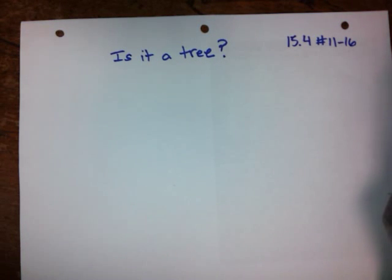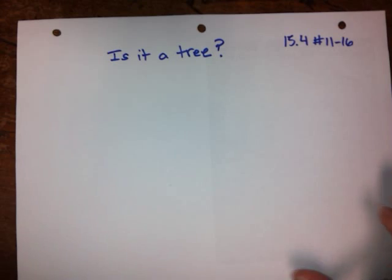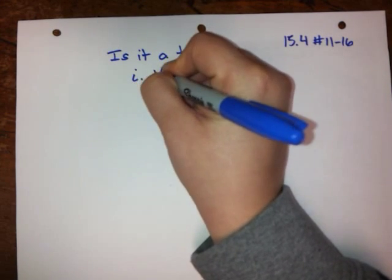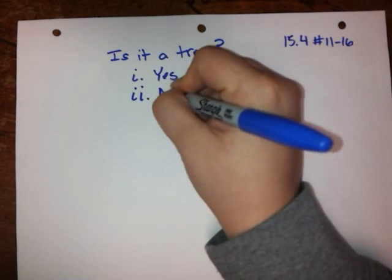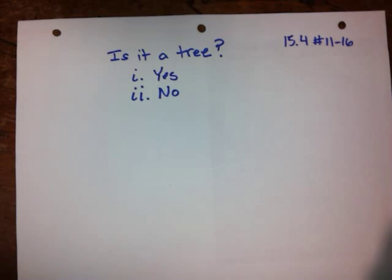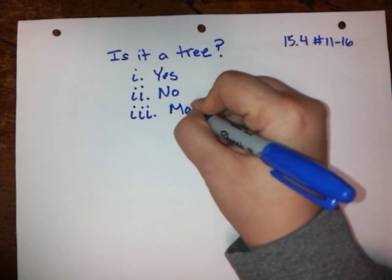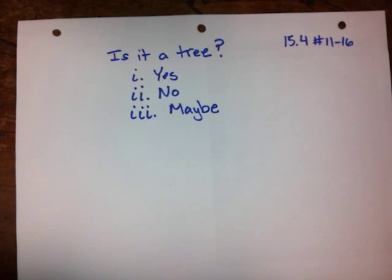Let's take a look at homework 15.4, numbers 11 through 16. They're going to give us a description of a particular graph and ask us whether or not that graph is a tree. Option one is yes, the graph is definitely a tree. Option two is no, the graph is definitely not a tree. And option three is maybe — it could be a tree or not; it's hard to tell from the description.